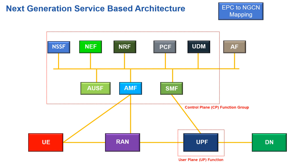Looking at the central group, they can all be regarded as the control plane functions within the next generation service-based architecture. The lower part of the network — the UPF — represents the user plane functionality. These are the two groups, or if you like, CUPS: the Control and User Plane Separation.